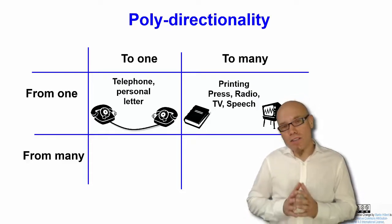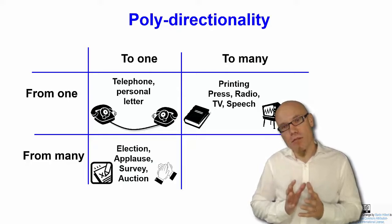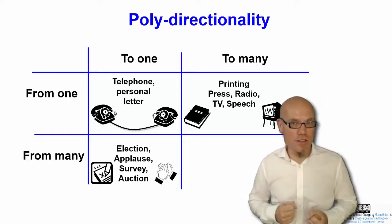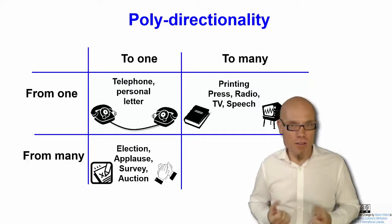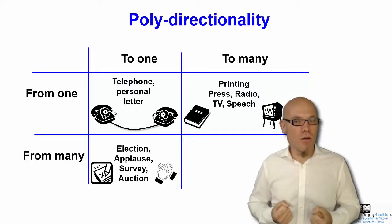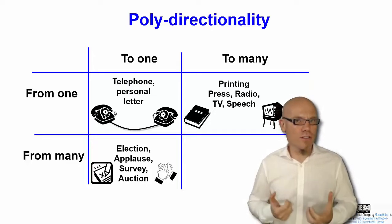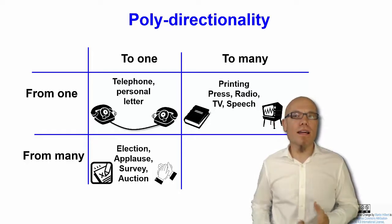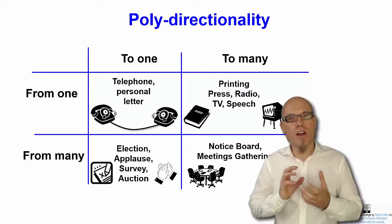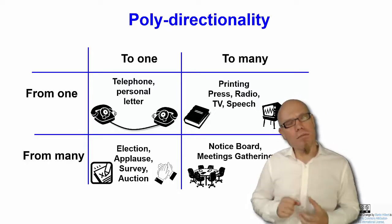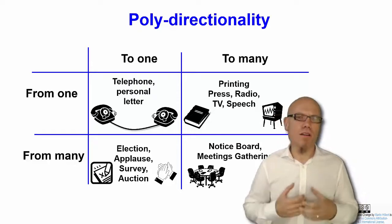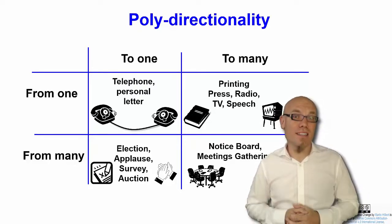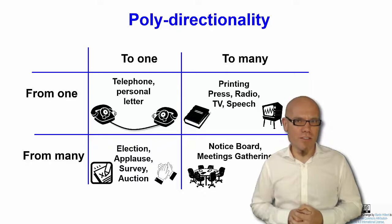There are also some communication channels that allow communication from many-to-one — for example, elections, applause, a survey, or an option. And then there is also communication from many-to-many, for example a notice board, a meeting, or a gathering that allows for many-to-many communication.